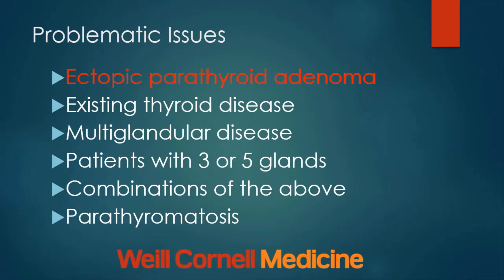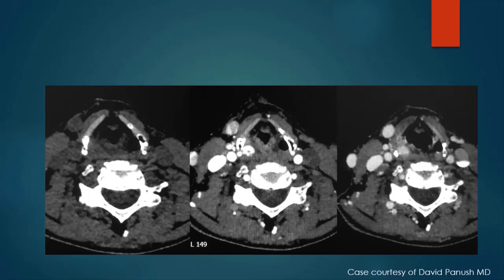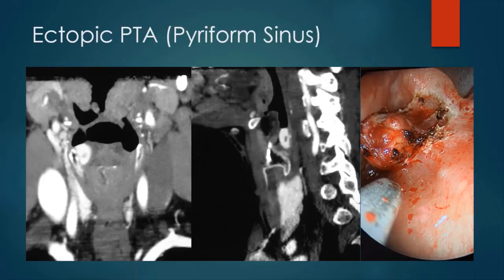Some problematic issues in parathyroid imaging. Let's start with ectopic parathyroid tissue. This case, loaned to me by Dr. David Panish, shows another ectopic parathyroid adenoma. On the initial 4D CT examination, there is an enhancing lesion at the apex of the piriform sinus, demonstrating typical washout on the delayed exam. On reformatted sagittal images, the lesion sits down at the apex of the piriform sinus. This information was used by the surgeon to perform an endoscopic procedure and mobilize the lesion from the apex of the piriform sinus.